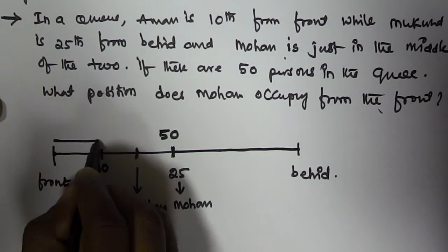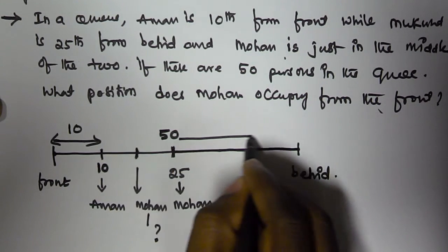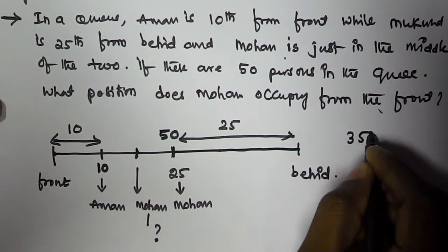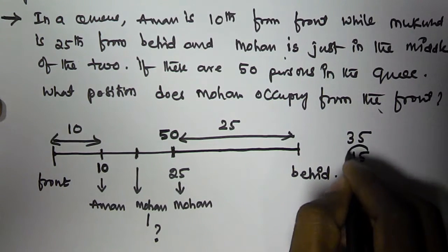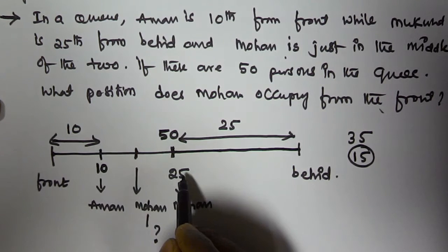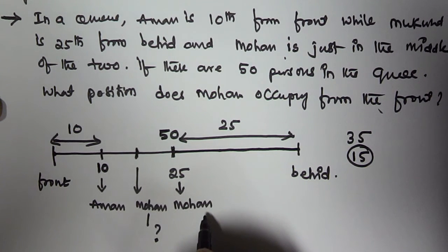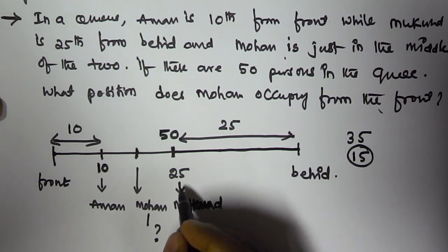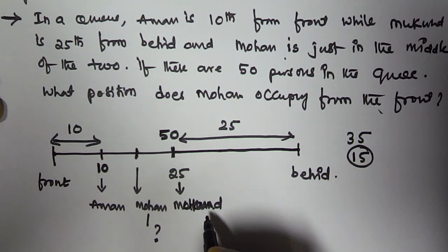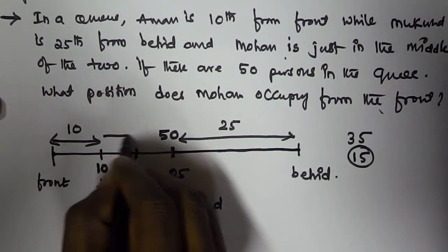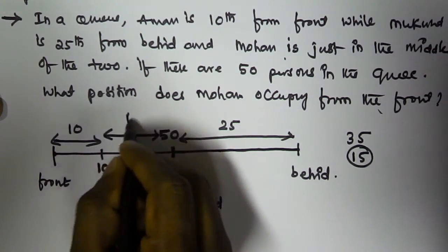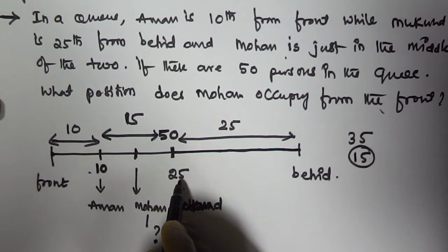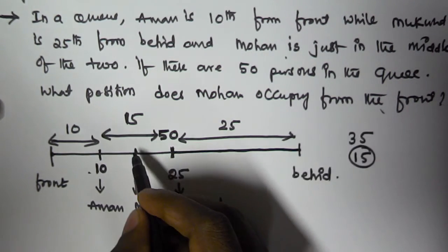From the front to Amun it is 10, and from the behind to Mukund it is 25. So total 35 positions are accounted for. The remaining is how many? 15 people are there. So that means in between Amun and Mukund, 15 people are there between them.